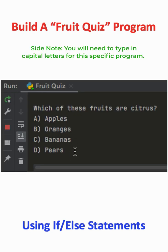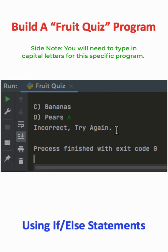And it asks us which of these fruits are citrus. So I'm going to say A, apples are citrus. And that tells us no, we're incorrect. We need to try again.